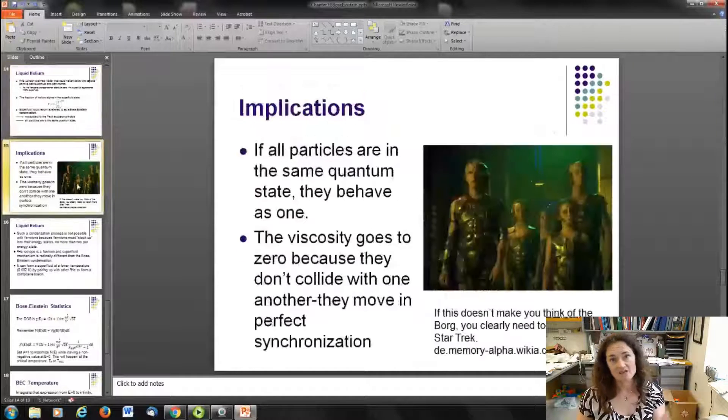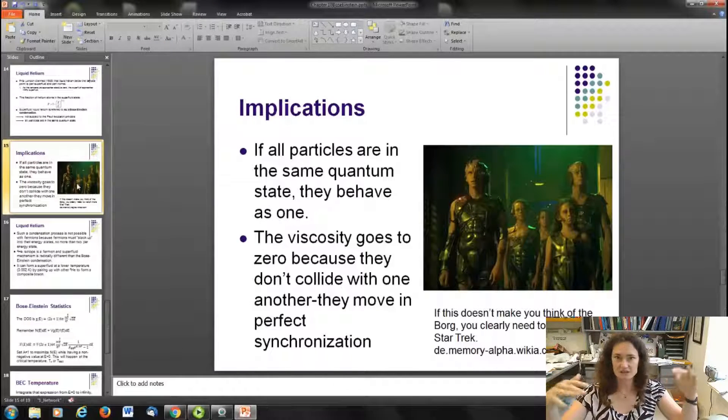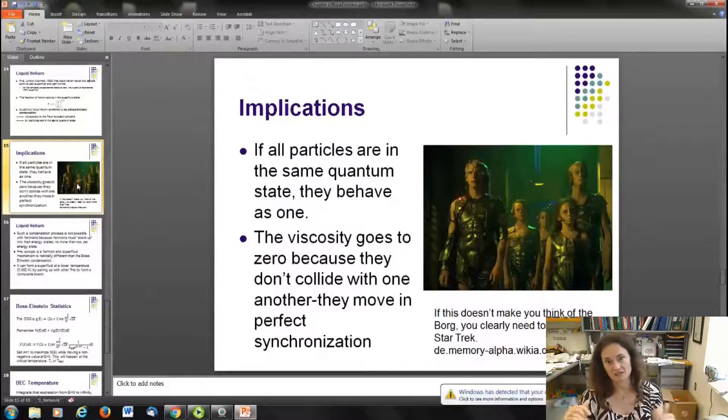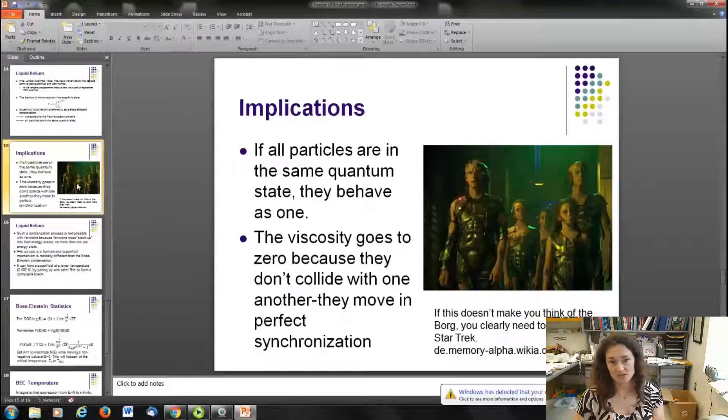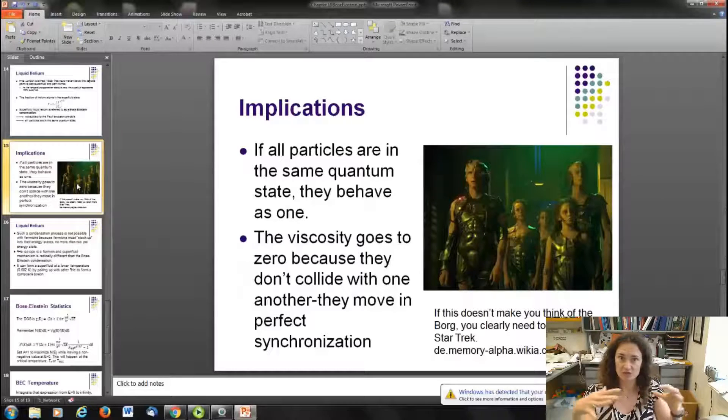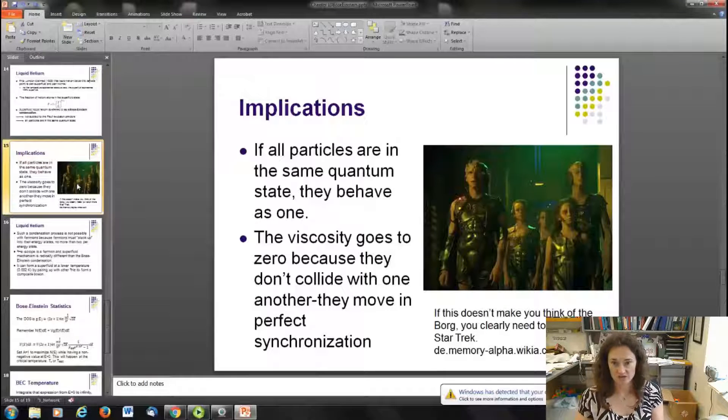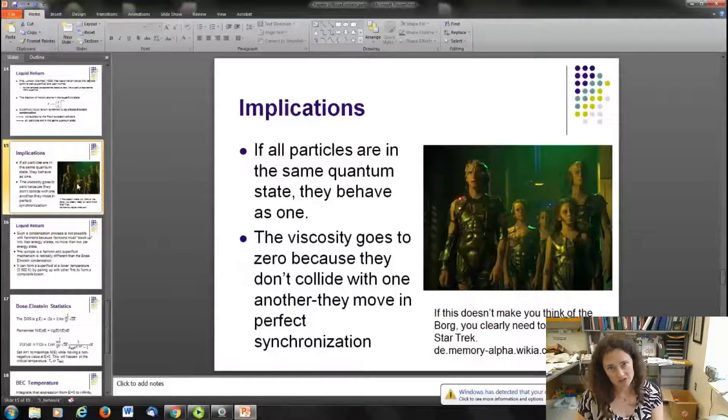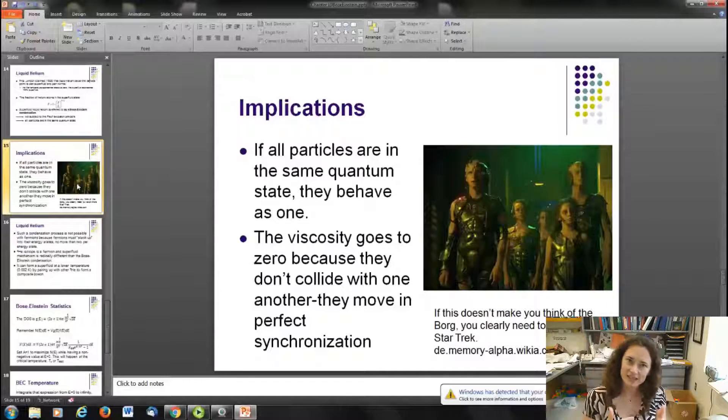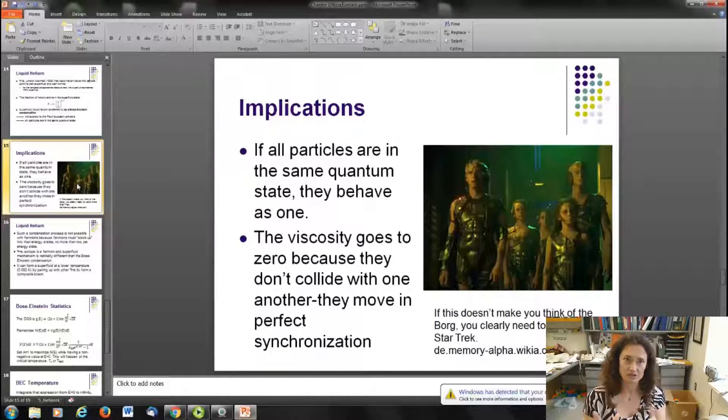Bosons can do this because they have integer spin and are not subjected to the Pauli exclusion principle. So what happens in a Bose-Einstein condensate is all the particles fall into the same quantum state, which means, basically, if they're all in the same quantum state, they have perfect knowledge of every system, everything in the system. They all know where each other is. They're behaving, basically, as one. So the viscosity can actually go to zero because the particles don't collide with one another anymore. They're moving in perfect synchronization together, and that's one of the reasons that superfluids do what they do regarding the viscosity. Now, if this doesn't make you think of the Borg, you really need to watch a little bit more sci-fi, a little more Star Trek. You need to get into the nerdiness that you have joined by becoming a physics major. It's actually pretty enjoyable.